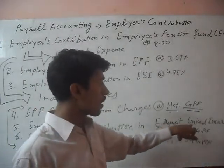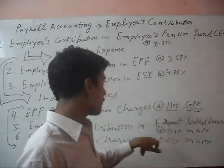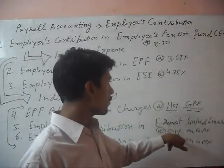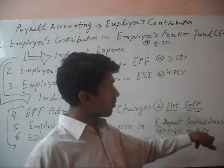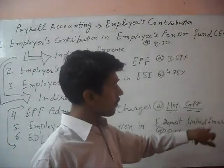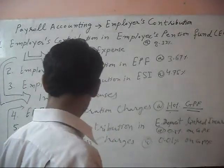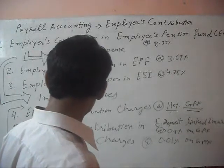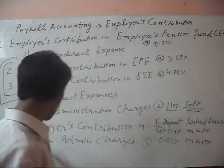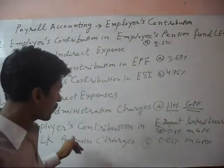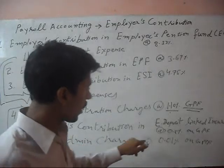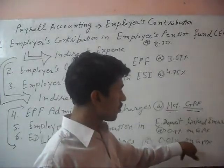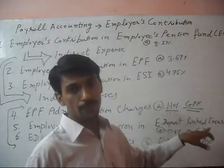Then employer's contribution in employee's deposit linked insurance is 0.5% on gross pension fund. And lastly, employee's deposit linked insurance administrative charges are 0.01% on gross pension fund.